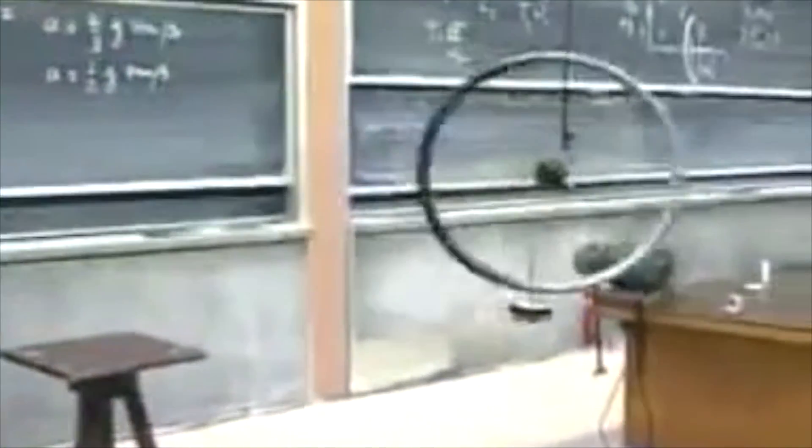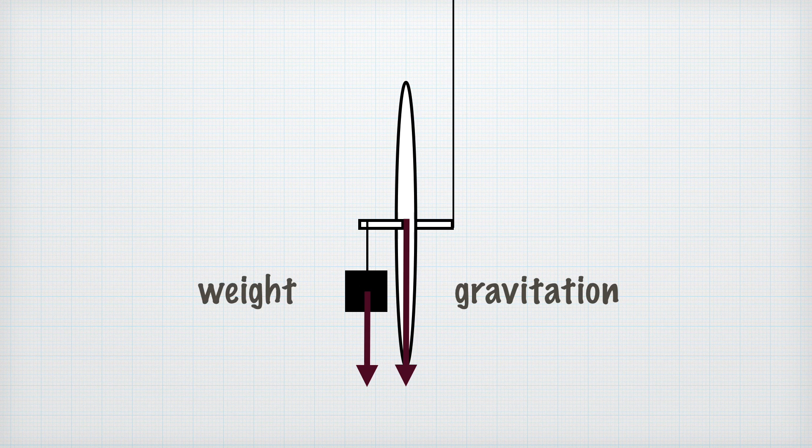Therefore, when Professor Lewin hangs a weight on the wheel, it just increases the rate of rotation that has originally been caused by gravitation, pulling on the axis of the wheel in the same direction.